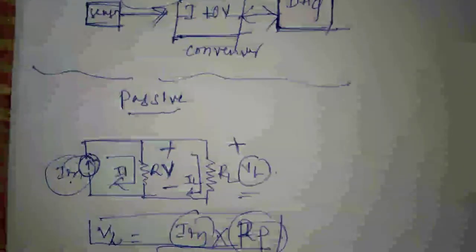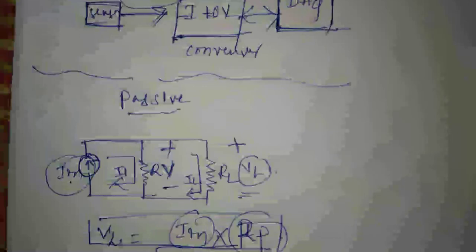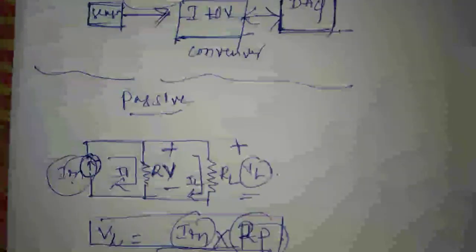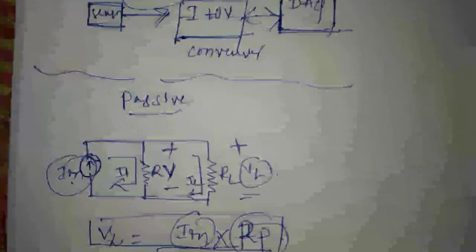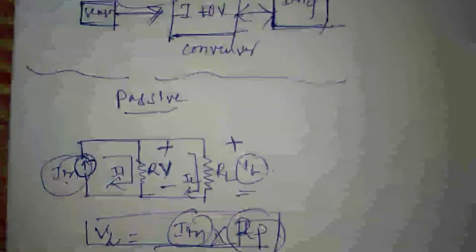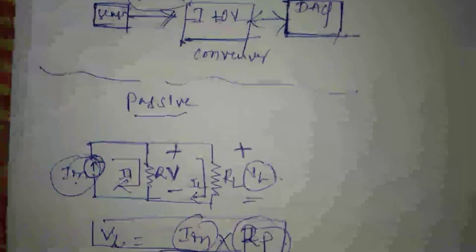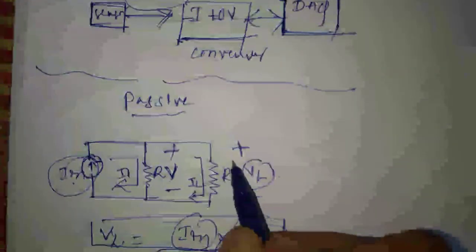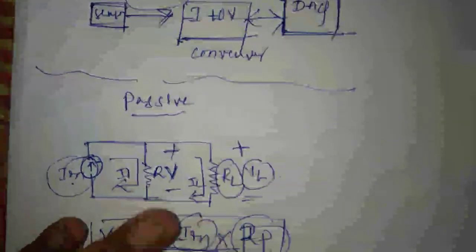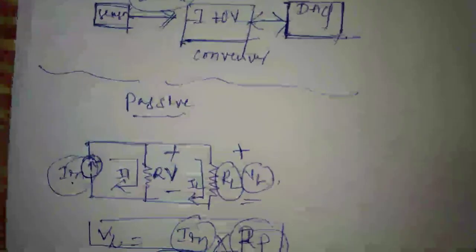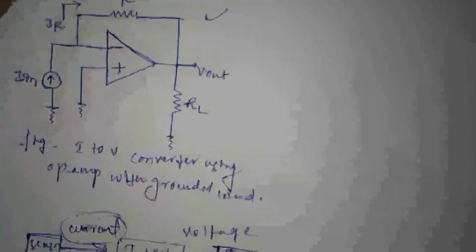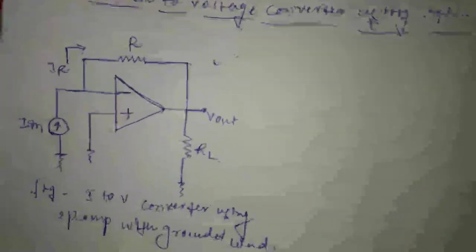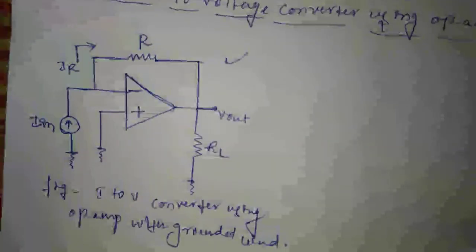So you can see there is a dependency on load resistance RL in this equation. The value of voltage available at the load is dependent on load resistance, and ideally this should not happen. So can we have a circuit where the dependency on load resistance can be eliminated?